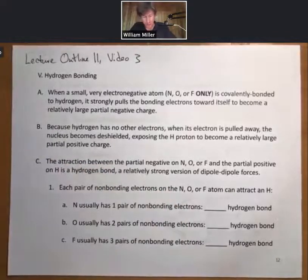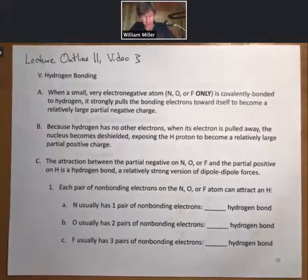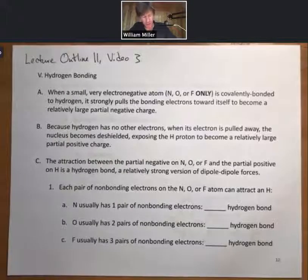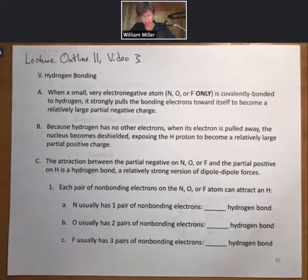So when a small, very electronegative atom—nitrogen, oxygen, or fluorine only—is covalently bonded to hydrogen, it strongly pulls the bonding electrons toward itself to become a relatively large partial negative charge.